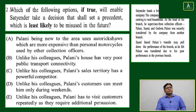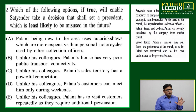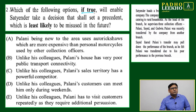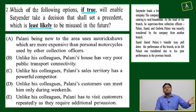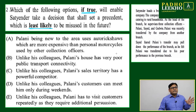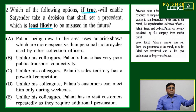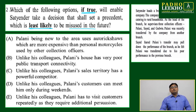Moving to question number two, based on the same data. There is a big structure word used here: 'which of the following options, if true, will enable Satyanda to take a decision that shall set a precedent which is least likely to be misused in the future.' When we read this question the first time, we may not get a clear idea, so we must read it a second time.